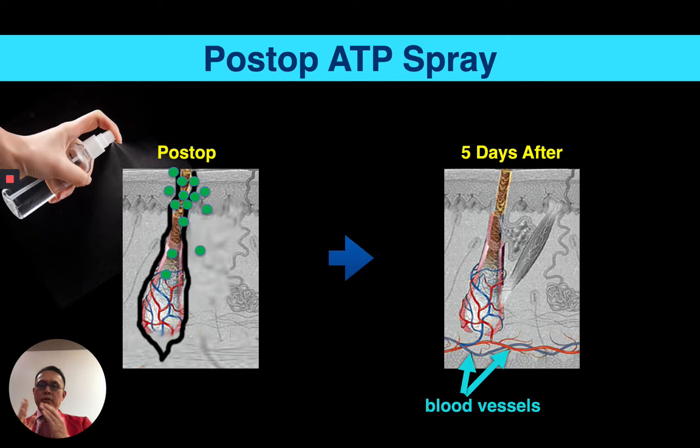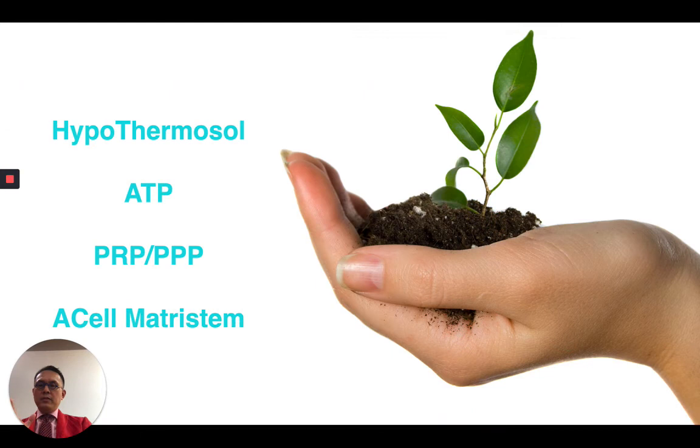Part of the equation isn't just storing grafts in ATP, but there's a period from day one to day five — I call it CPR for the grafts — where blood supply is starting to take hold in the first two to five days. An ATP spray that patients spray every hour really does well. I'll give you my formula in a minute.